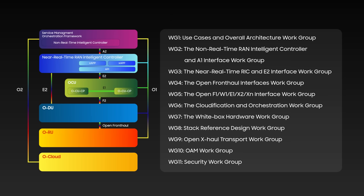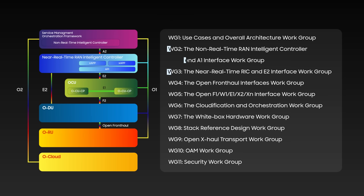There are 11 working groups that examine different parts of the Open RAN architecture, including use cases, RAN intelligent controller, open fronthaul interface, and security.